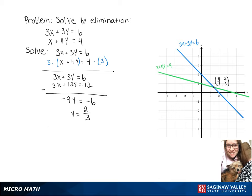Then we can plug that 2 thirds back into our equation. So let's do 3x plus 3 times 2 thirds equals 6. And then 3x plus 2 equals 6.